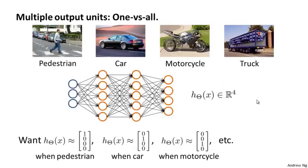The way we do multi-class classification in a neural network is essentially an extension of the one versus all method. So let's say that we have a computer vision example, where instead of just trying to recognize cars, as in the original example that I started off with, let's say that we're trying to recognize four categories of objects. Given an image, we want to decide if it's a pedestrian, a car, a motorcycle, or a truck.